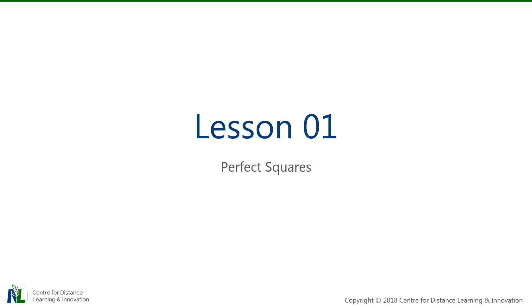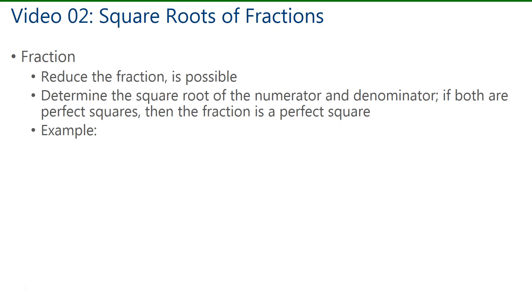Welcome back to Lesson 1 on Perfect Squares. In this video we'll look at finding square roots of fractions. For a fraction you should start by reducing the fraction if possible. Then you determine the square root of the numerator and square root of the denominator. If both are perfect squares then the fraction is a perfect square.